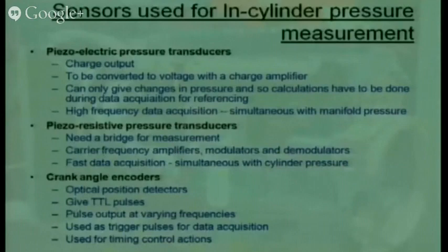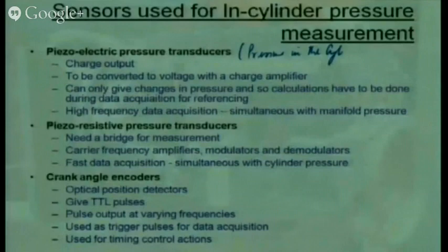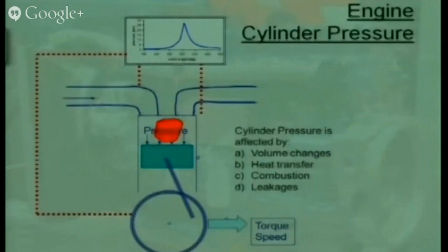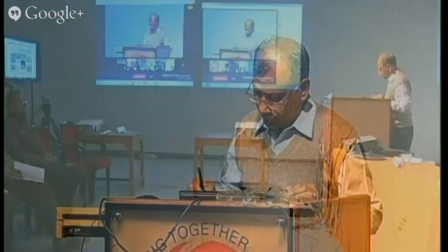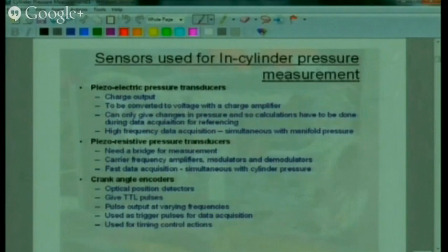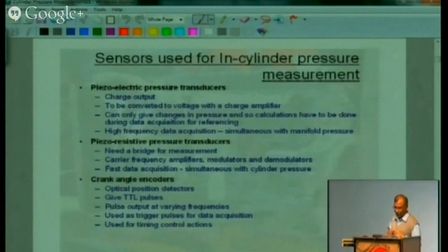When it particularly comes to cylinder pressure, we use piezoelectric pressure transducers. The piezoelectric pressure transducer is the heart of the entire measuring chain. It is mounted on the cylinder head and gives a charge output. This charge output has to be converted to a voltage using a charge amplifier, which is basically a capacitor that gets charged and then the voltage is amplified.